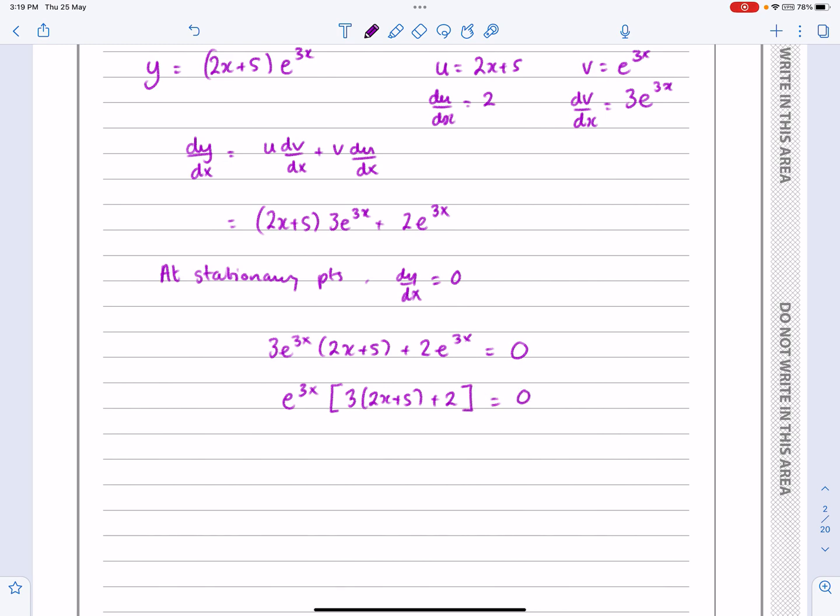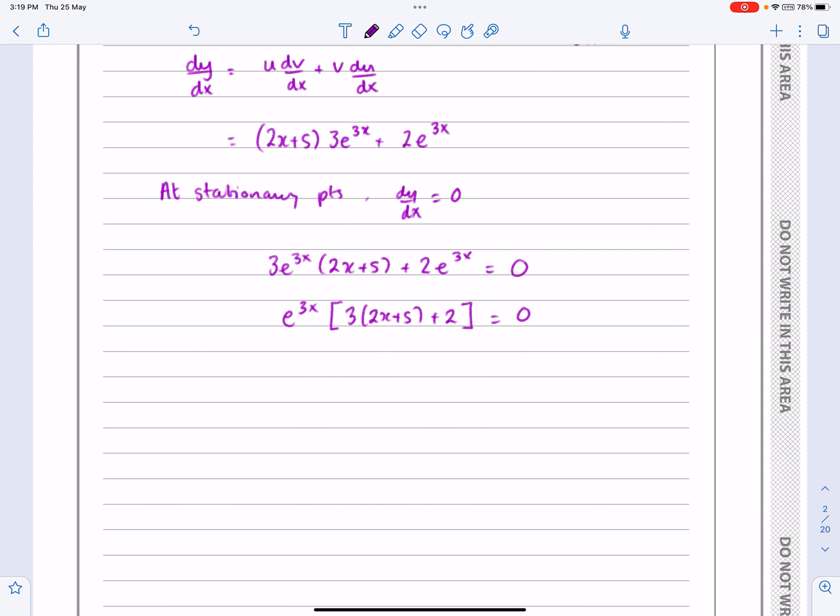And they do this a lot with exam questions here, where that looks like a really complicated equation with lots of different answers, but here actually when I'm doing this, well, let's break it down. I'm going to get e^(3x) equals 0, or the other bit equals 0.